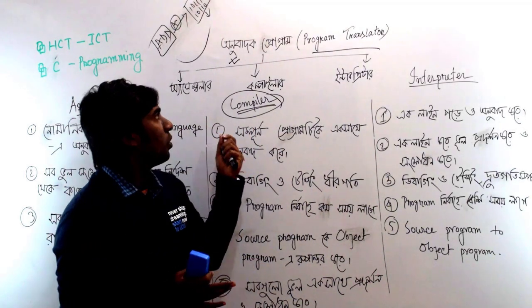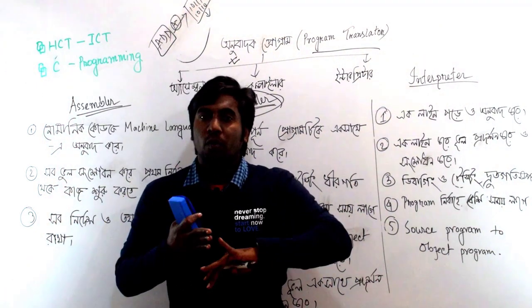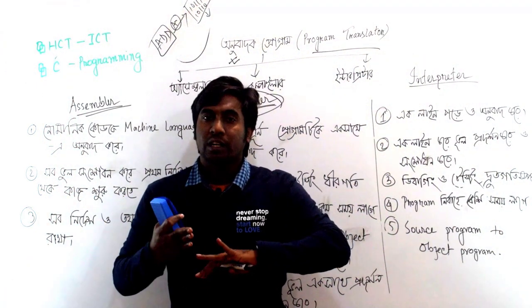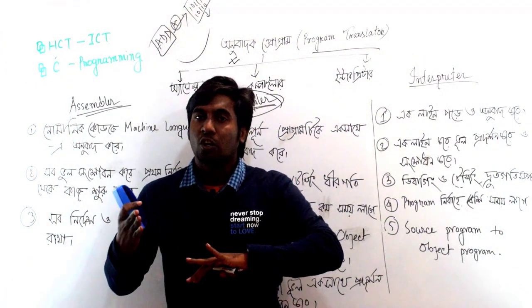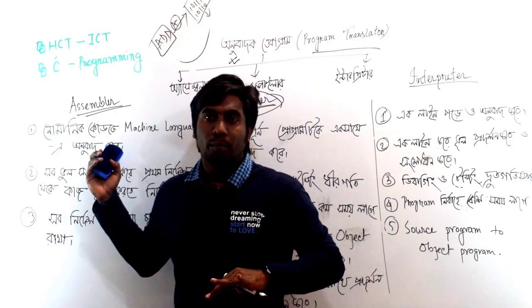In summary, the three program translators are: assembler, compiler, and interpreter. These are used to translate source programs into object programs that the computer can execute.